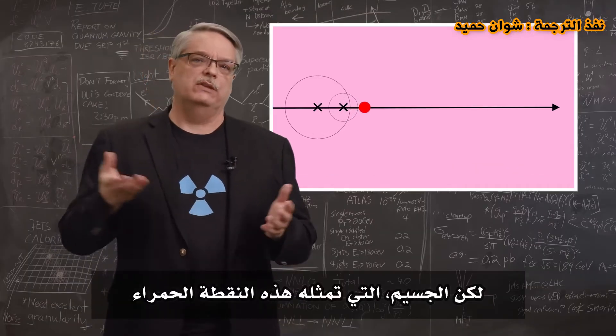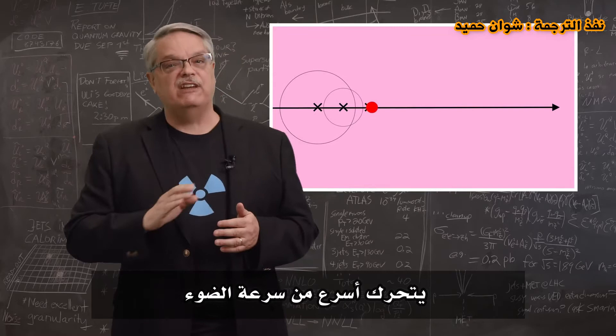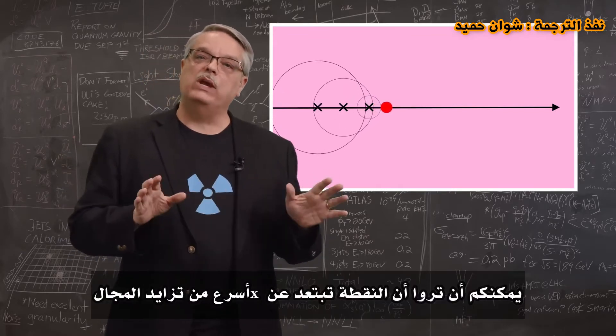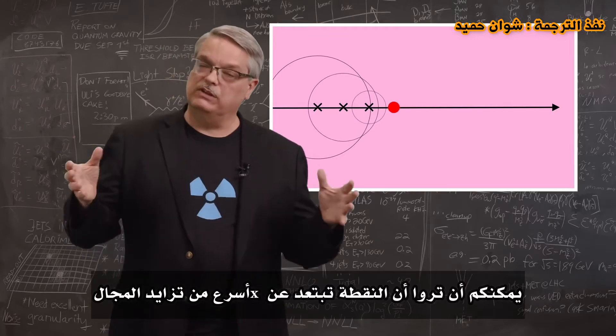But the particle, which is represented by this red dot, is traveling faster than the speed of light. You can see that the dot moves away from the x faster than the sphere grows.